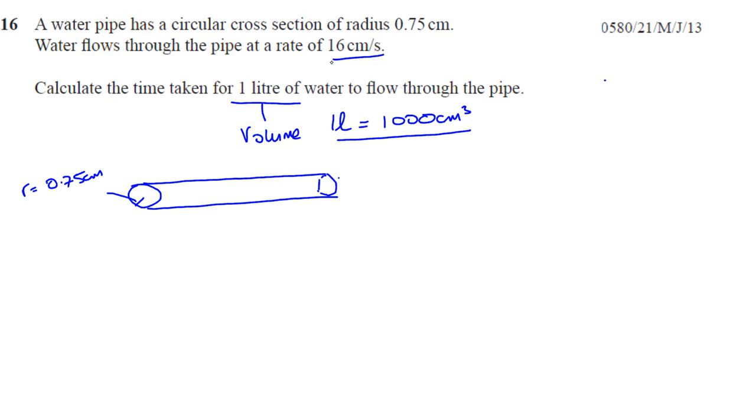So that means every second you have this length of water flowing through the pipe. You could say that in one second, this is the volume of water flowing through the pipe. It's like the shape of a cylinder with height of 16 centimeters and radius 0.75.